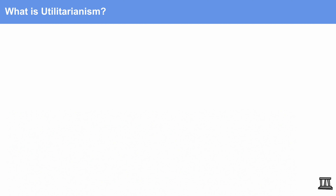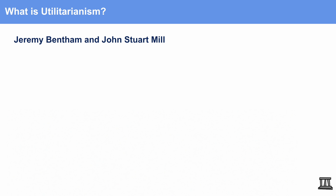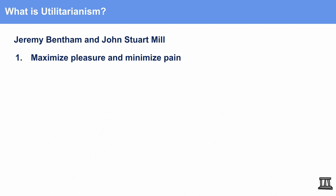Now let's talk about utilitarianism. Utilitarianism was made by Jeremy Bentham and John Stuart Mill, also very old philosophers. The first part of their philosophy says that we should maximize pleasure and minimize pain. This is a pretty hedonistic theory because it says that we should do things that give us pleasure and try to cut down on things that give us pain.